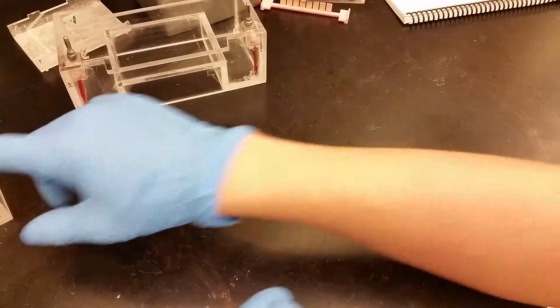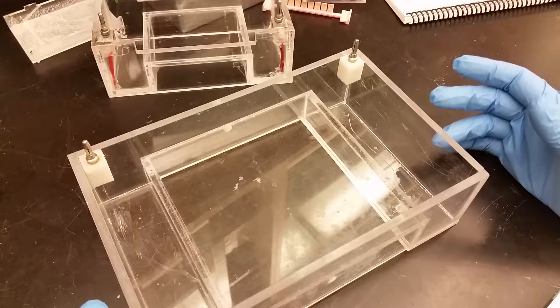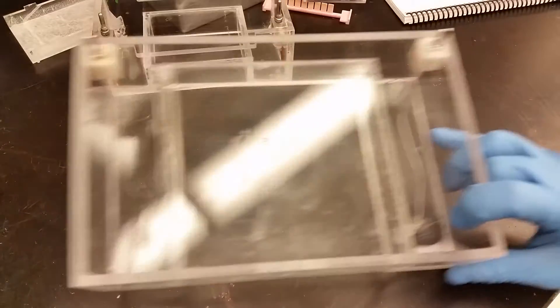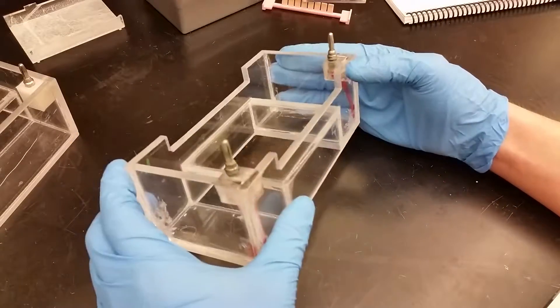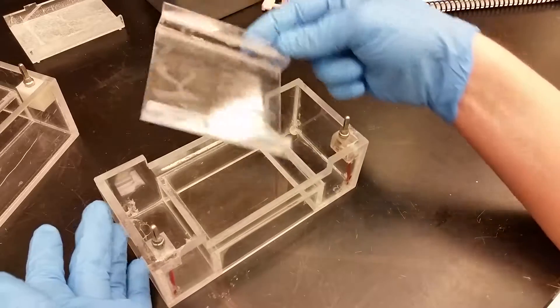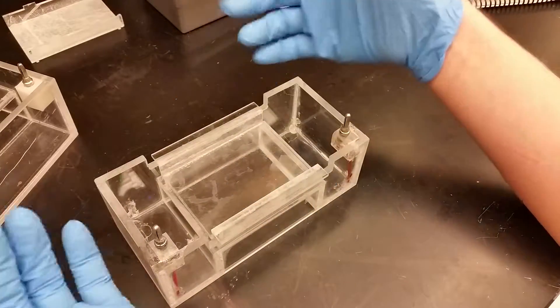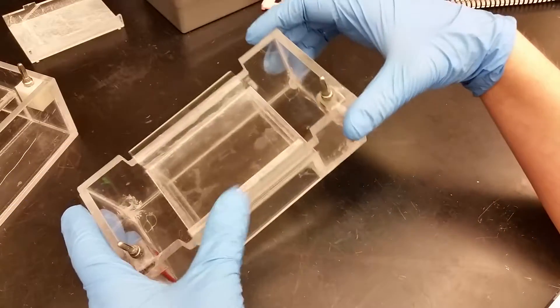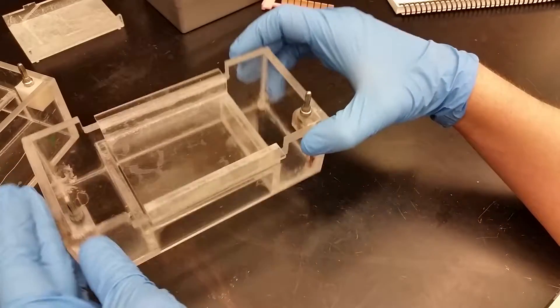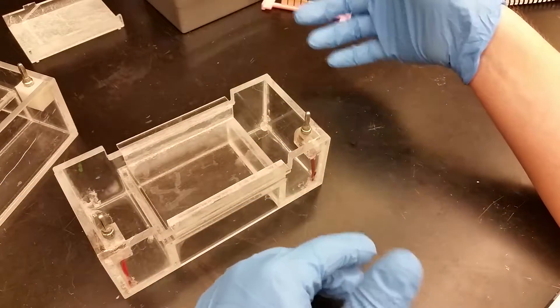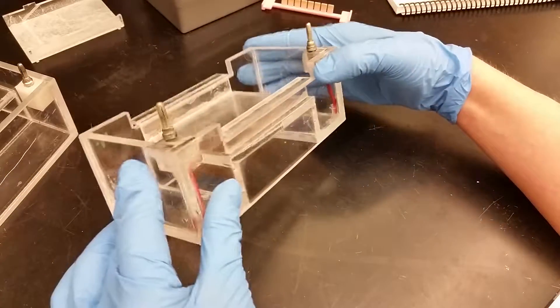But really you don't necessarily have to follow them as long as it's generally this size, generally this shape. You can make your gel chambers and your casting trays even bigger if you like, if you want gigantic gels, or you can make them smaller. The exact size doesn't particularly matter, the exact dimensions don't matter, as long as your trays fit in your chamber and there's room for buffer. You can't really screw this up.